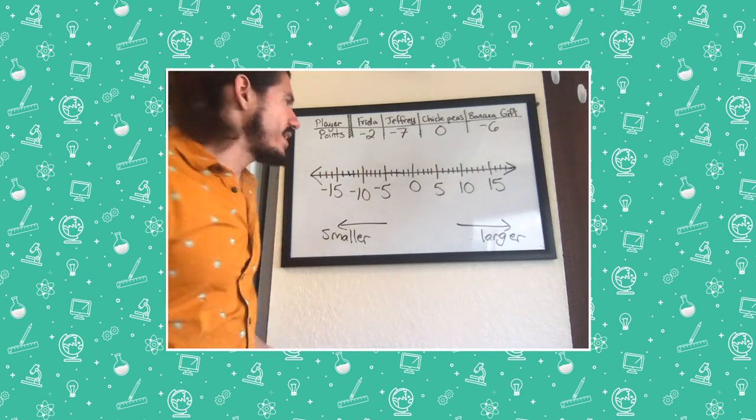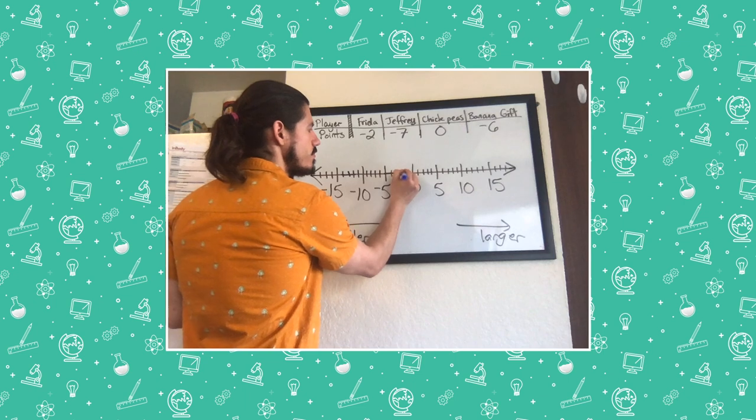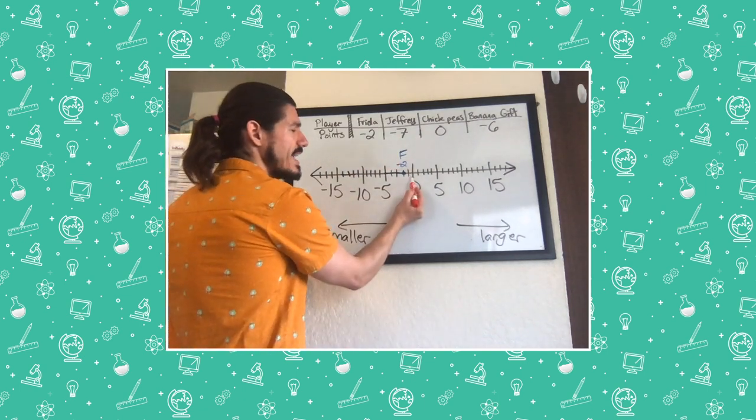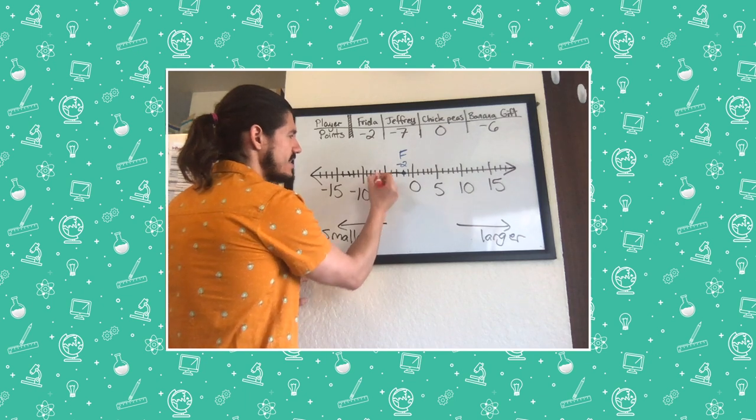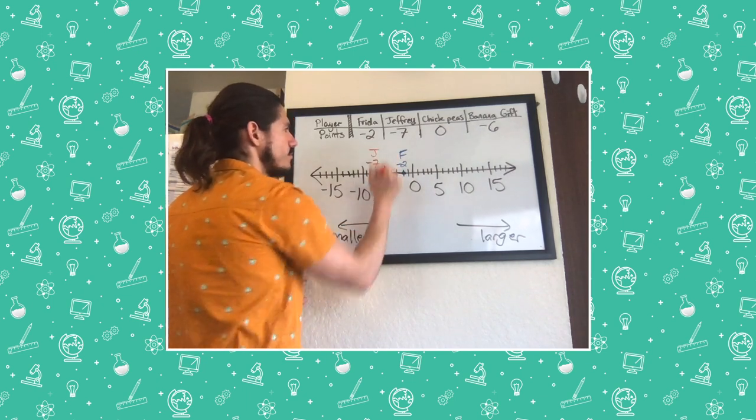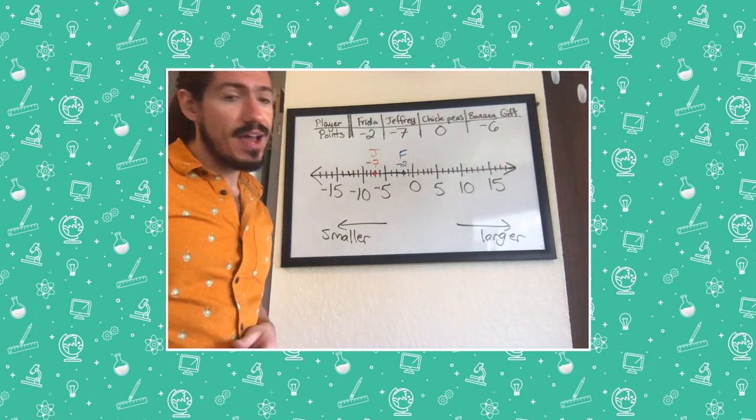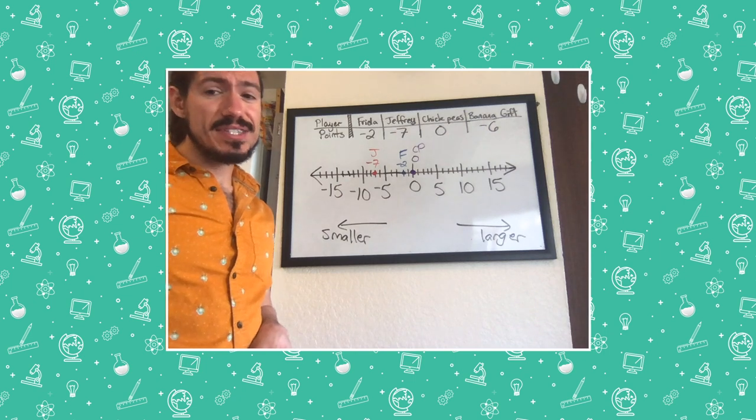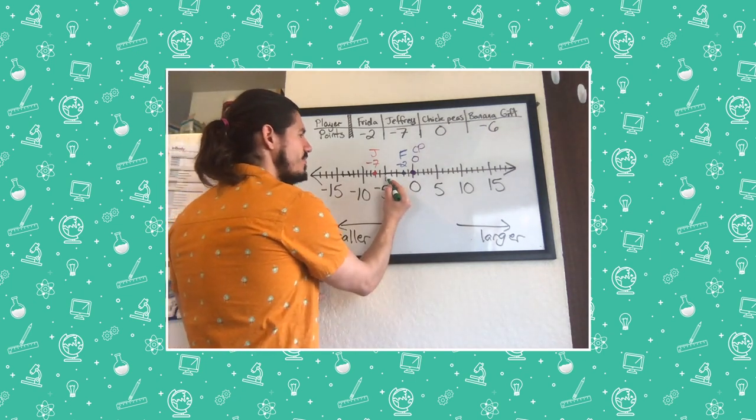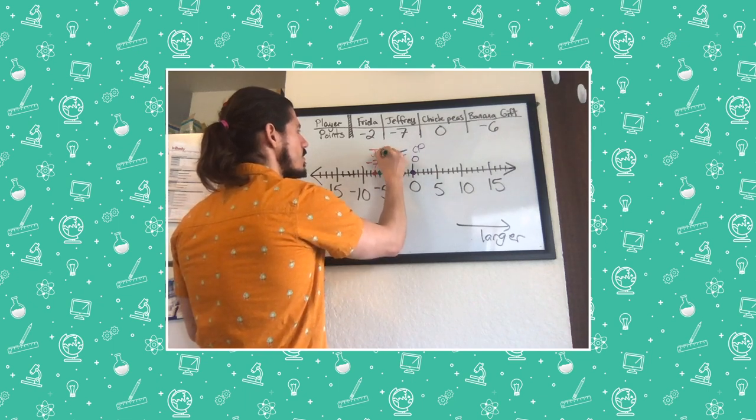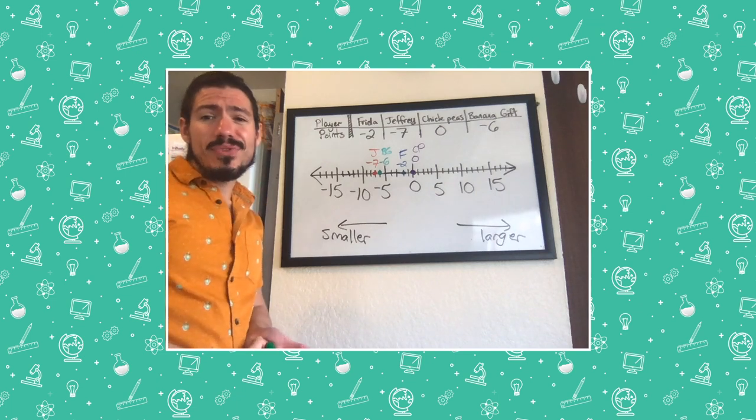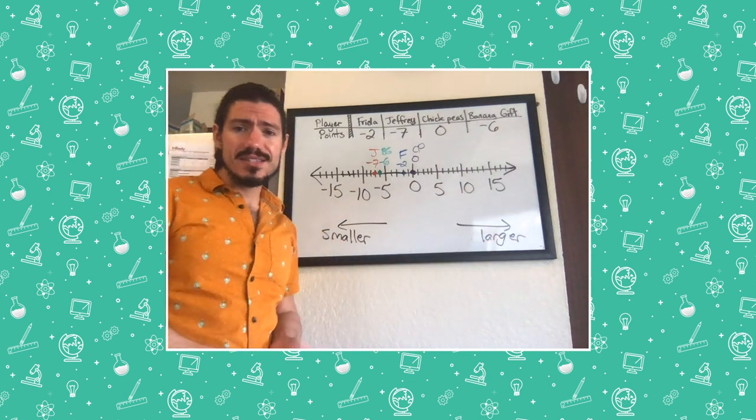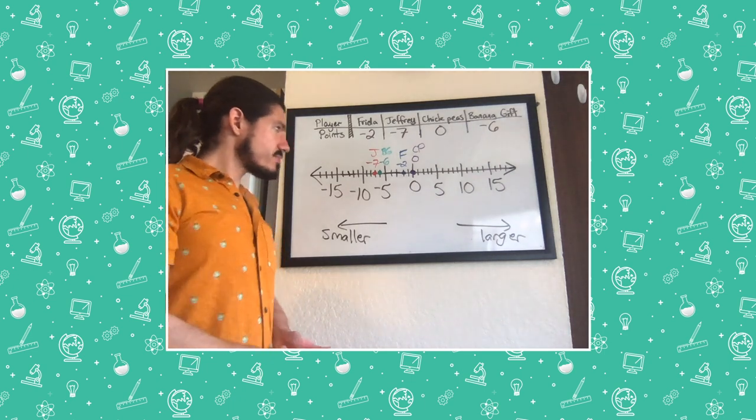Frida got negative two points. So I'm going to put her at negative two. Jeffrey got negative seven points. So I'm going to put him at negative seven. Negative five, negative six, negative seven. Chickpeas got zero points. Luckily that one's easy to find. Finally, banana gift got negative six points. Here's negative five, negative six. Well, just like we did before, we can just look at which numbers are further to the left to find out who got the smaller scores and which numbers are further to the right to find out who got the larger score.